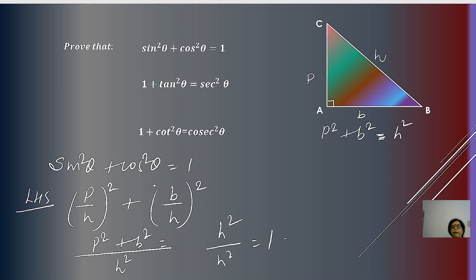It is not necessary that these identities can only be used in this format. We can transform this identity — for example, sin²θ = 1 - cos²θ. Transformations can be done by shifting terms to the left or right in all three cases.